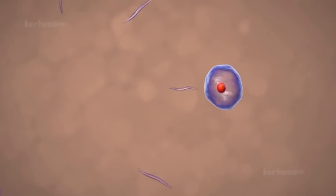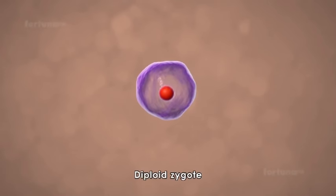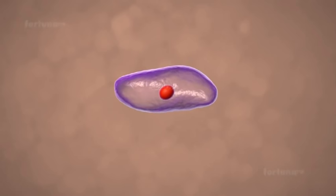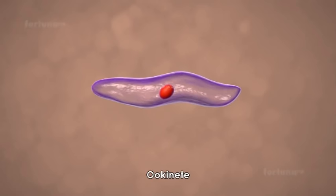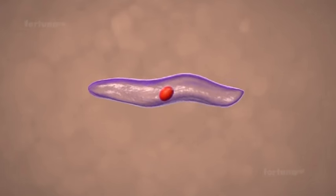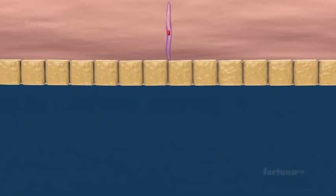The Gametes will fuse to form a Diploid Zygote in the Stomach of the Mosquito. The Spherical Zygote will soon develop into Elongated Worm-like Ookinete. The Ookinete will penetrate the wall and eventually reach the outer surface.